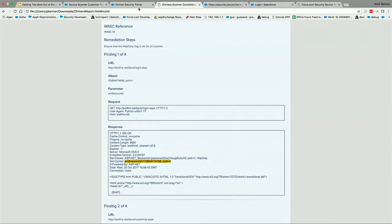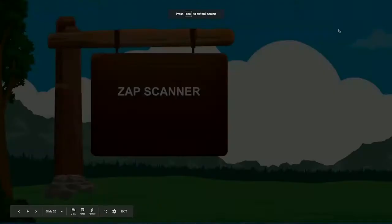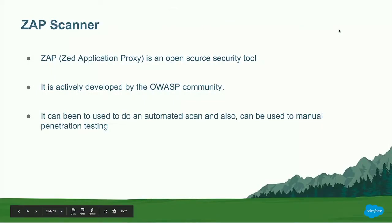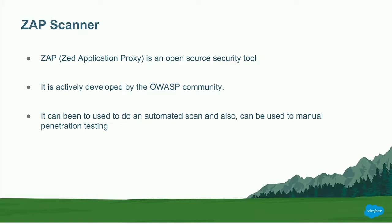If you're a customer and want to run a scan against your own custom-developed website — not Salesforce — we have Zap Scanner. Zap is an open source tool developed by OWASP. It finds a lot of security vulnerabilities and gives you a good report to review. It can be used for automated scanning — just give it a username, password, and URL, and it will spider the website and report all issues. Or you can use it for manual testing by giving it to your QA or security team for any security testing needed.